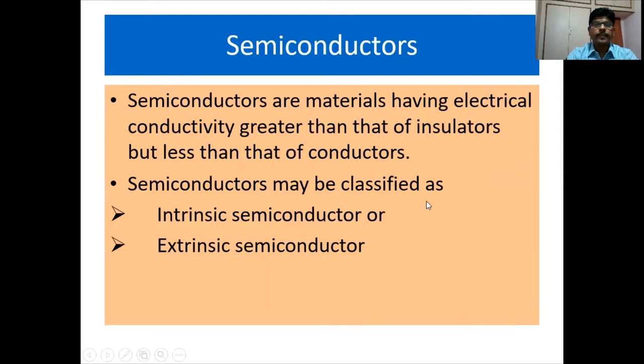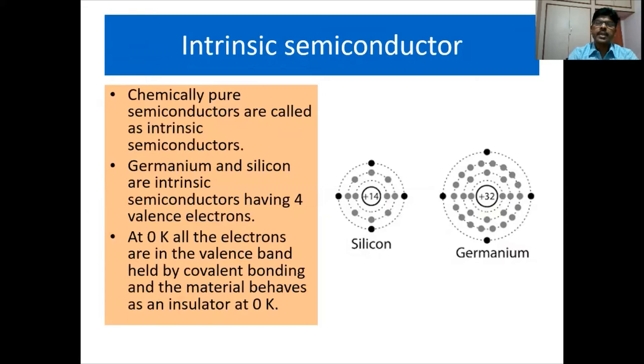Now, what is a semiconductor? Semiconductors are materials having electrical conductivity greater than that of insulators but less than that of conductors. Semiconductors may be classified as intrinsic semiconductors or extrinsic semiconductors. Chemically pure semiconductors are called intrinsic semiconductors. Examples are germanium and silicon.